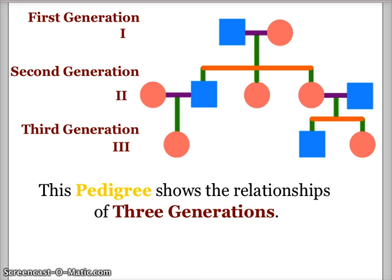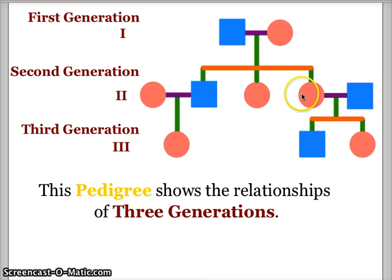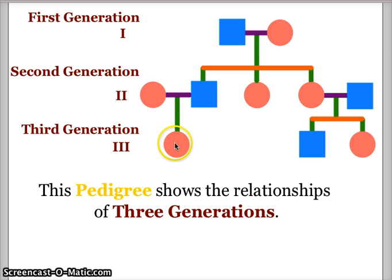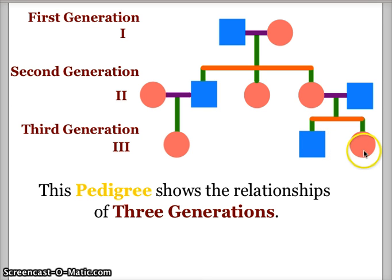This pedigree shows the relationships of three generations. The original male and female are the first generation. They have three offspring — a son and two daughters — that is the second generation. The son married and had a third generation daughter. The other daughter married, and that union created another son and daughter. So these are the grandparents, the parents, and the grandchildren.